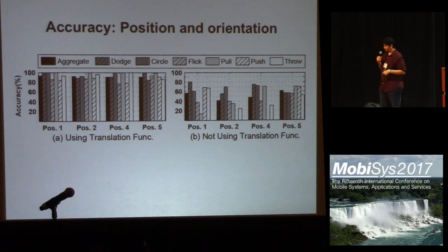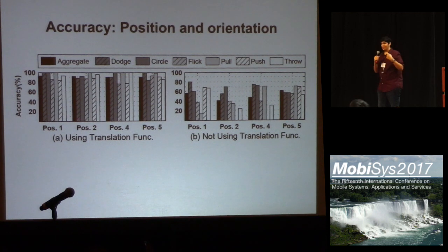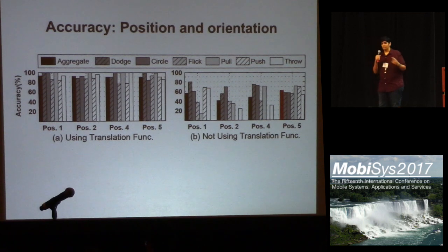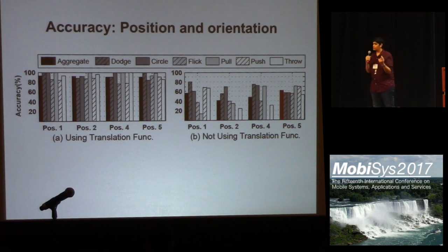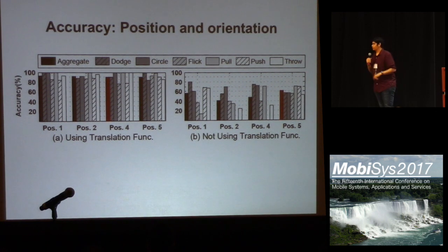This figure shows the comparison of individual gesture accuracies across all test configurations. The maximum aggregate accuracy when we do not include the translation function is 61.24 percent, while with the translation function it rises to 90.6 percent. The minimum aggregate accuracy also improves significantly with the translation function.